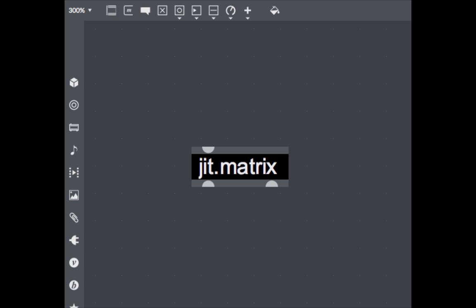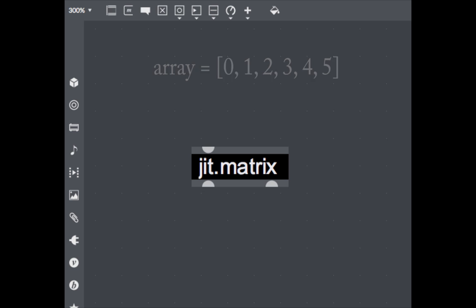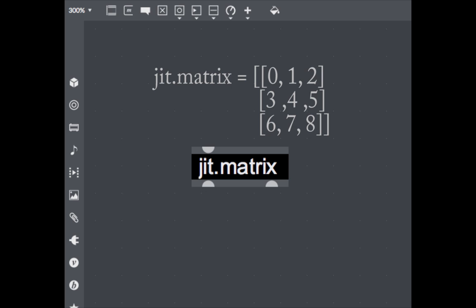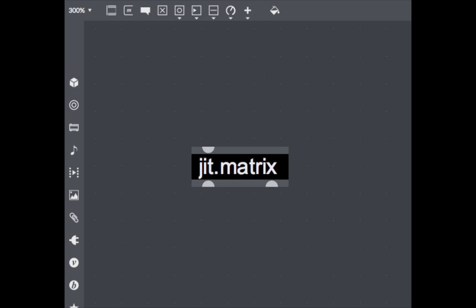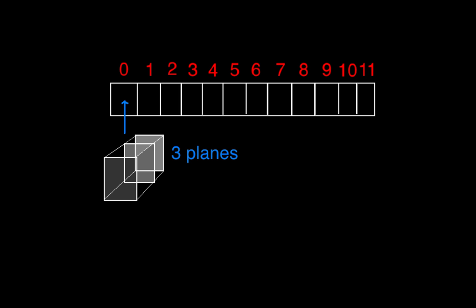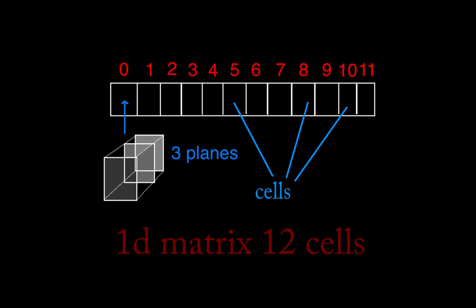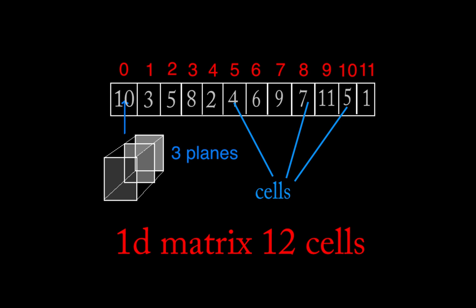A JIT matrix is something that in other programming languages would be called an array. But an array is usually one-dimensional, while a JIT matrix is a multidimensional container for data. Let's start with the graphical representation of a one-dimensional matrix. Those rectangles are called cells. This matrix is a one-dimensional matrix with 12 cells in it. The data stored inside the matrix goes inside those cells. Like an array in other languages, every cell gets an index starting from zero.